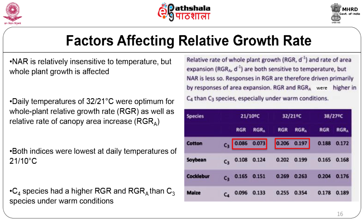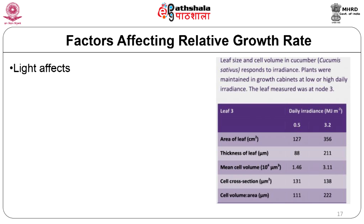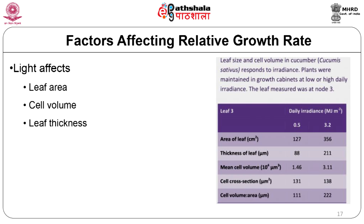Light intensity also impacts RGR. Leaves are generally larger at higher light intensities due to more cells per unit leaf area and a substantial increase in cell volume. This is seen as greater depth of palisade cells in strong light, which confers greater photosynthetic capacity and translates into larger values for NAR and a potentially higher RGR.